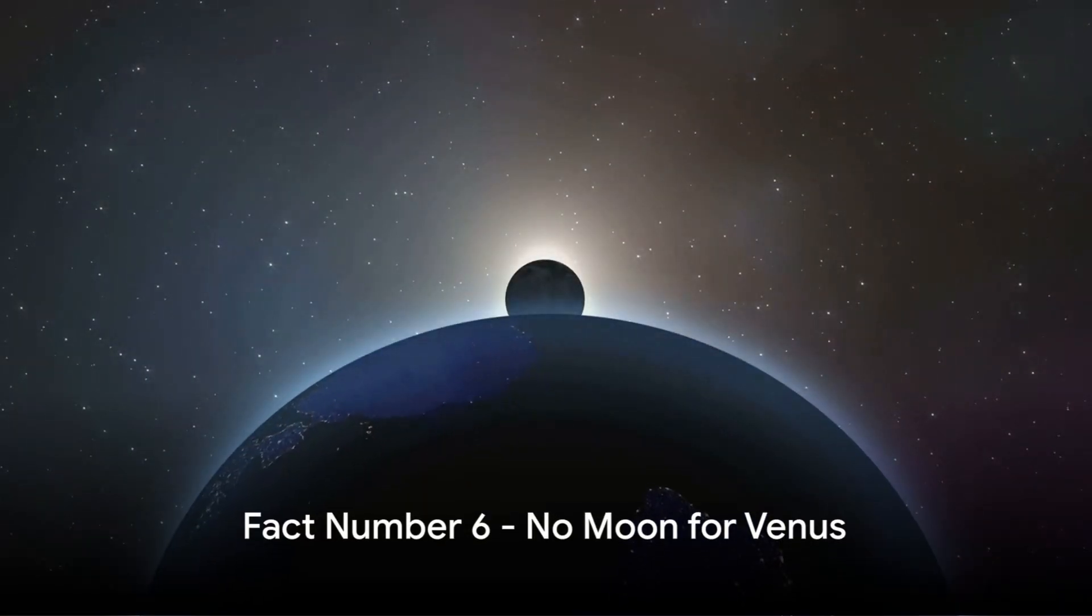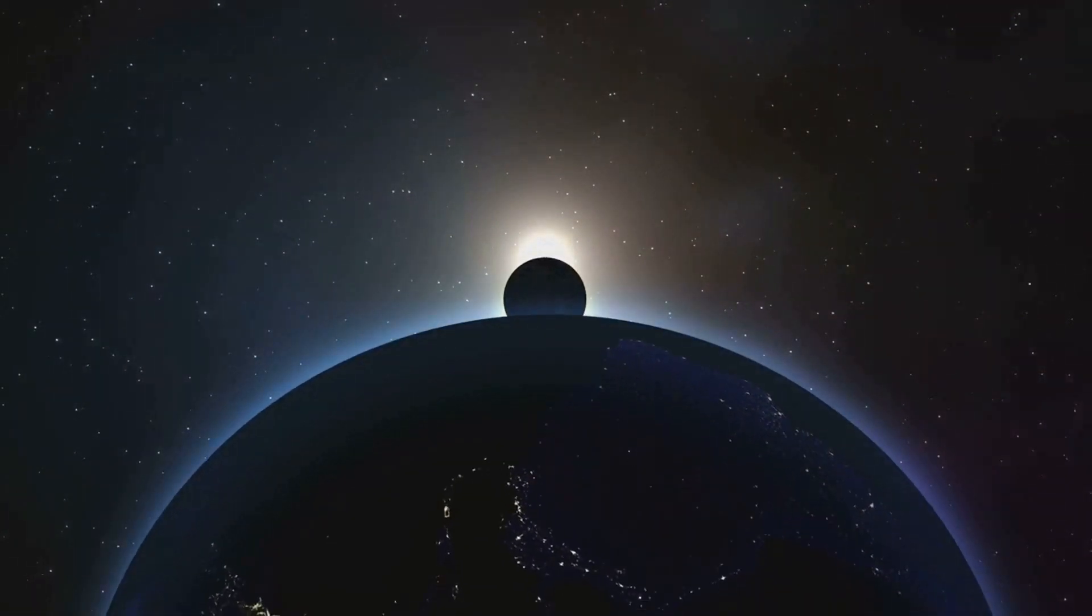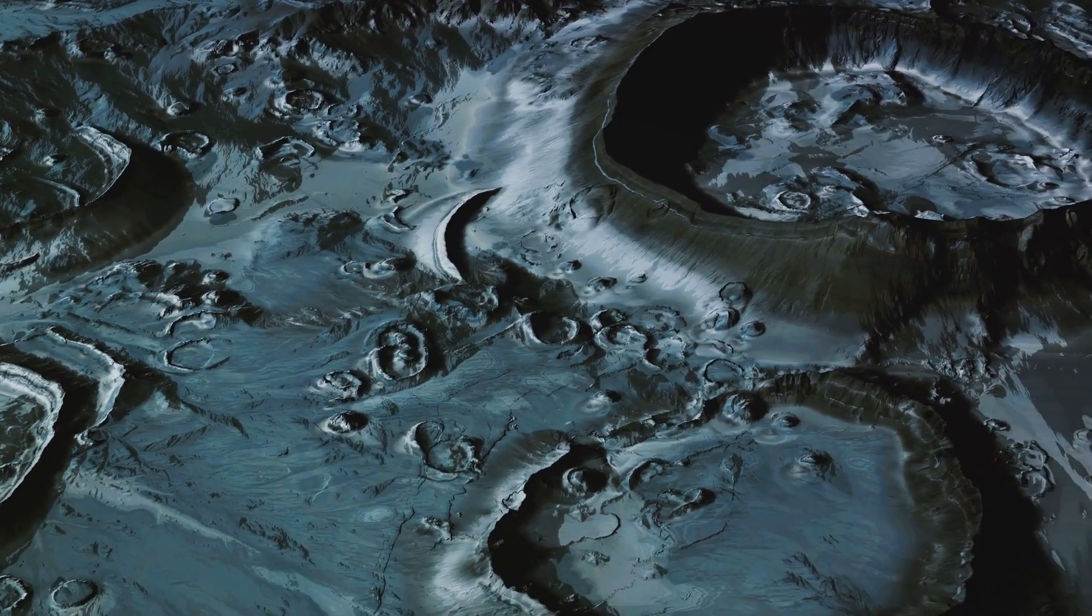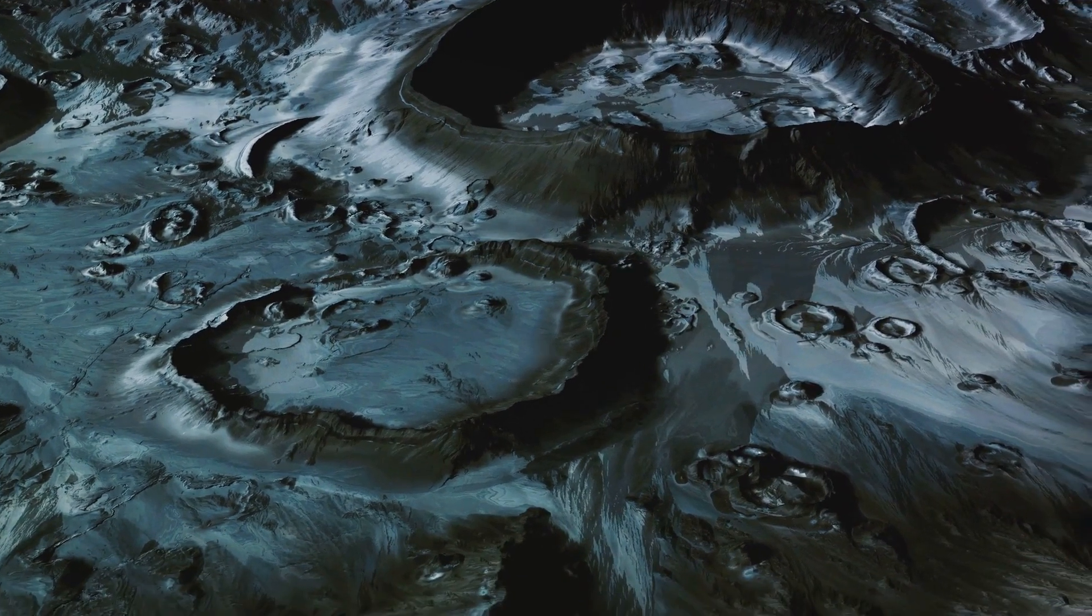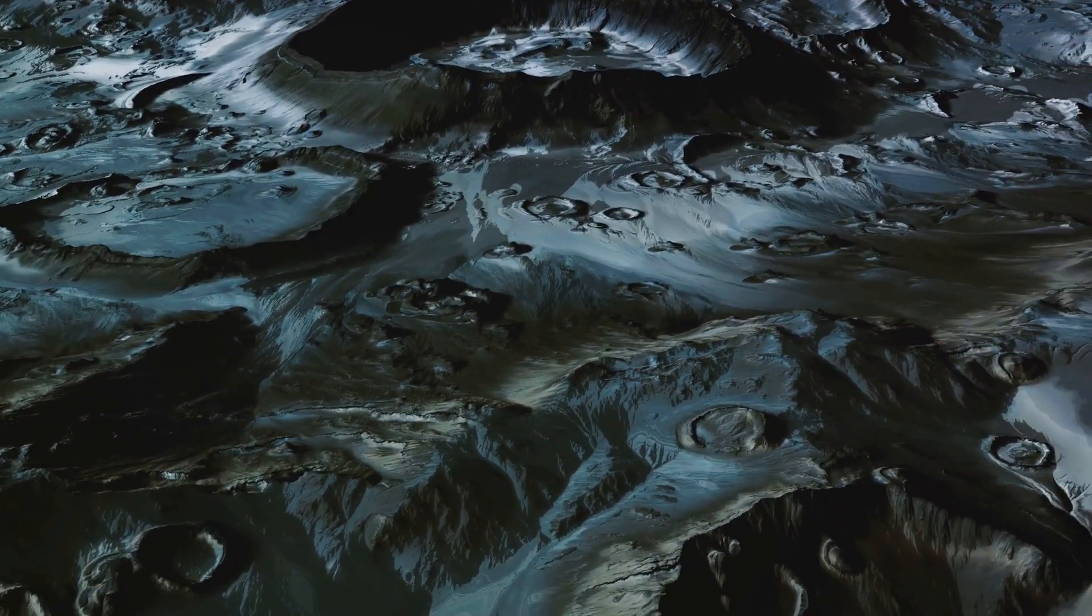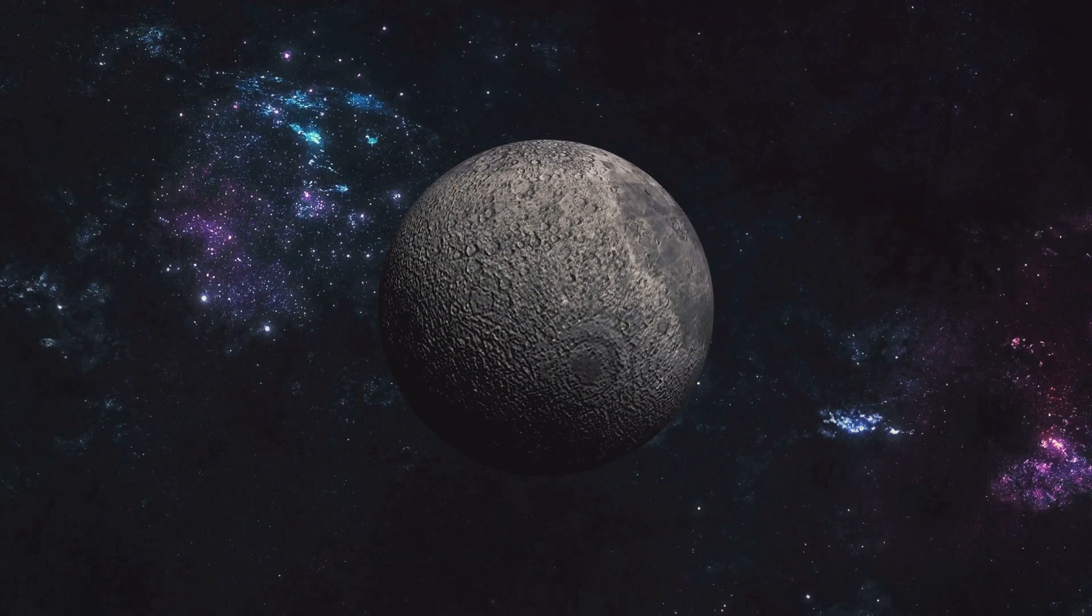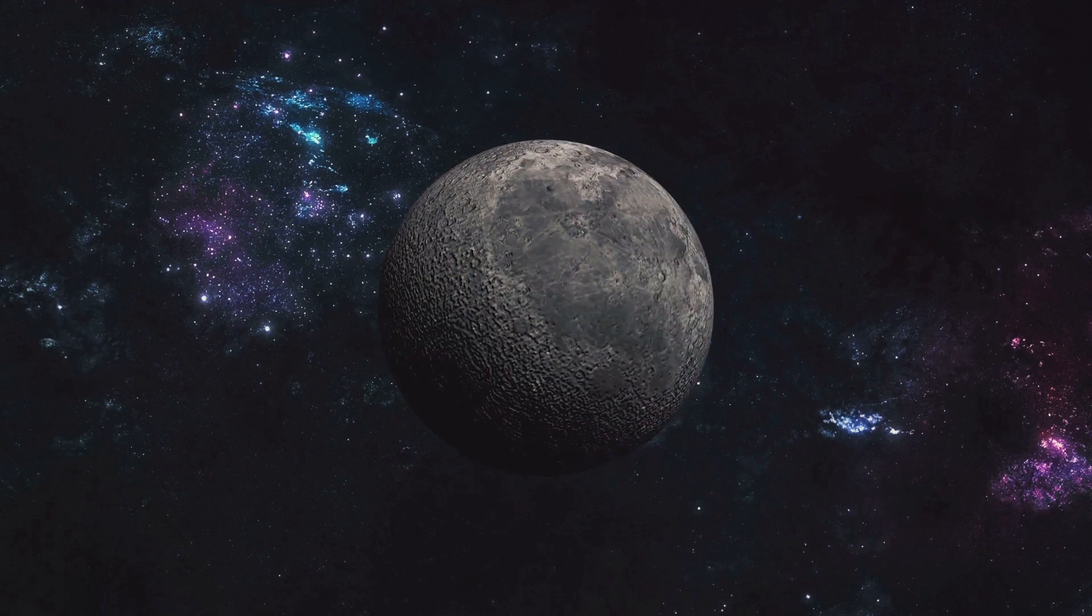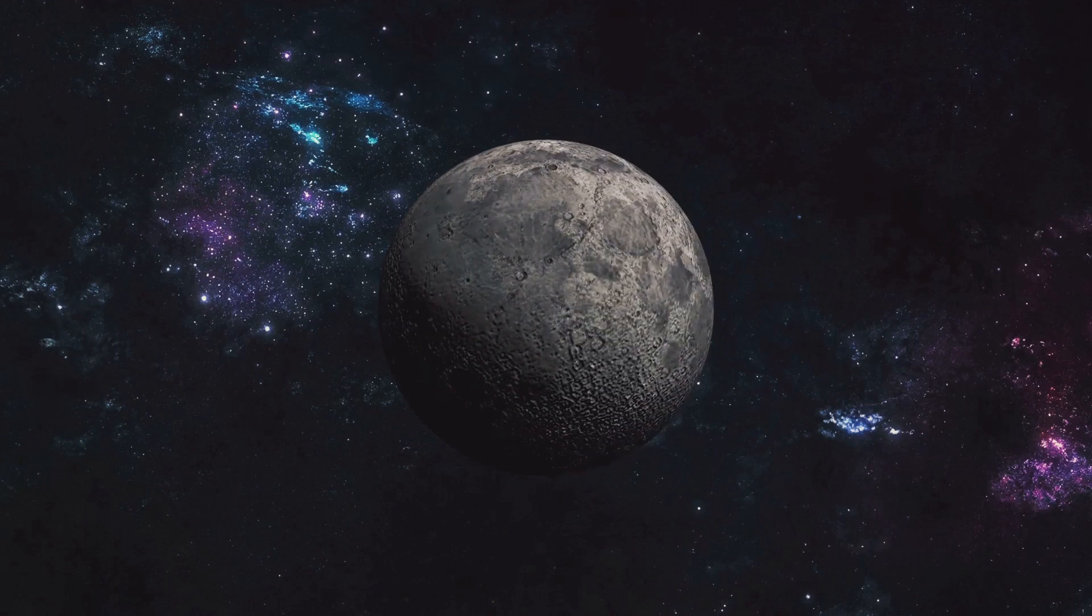Fact number 6, Venus is a lonely planet with no moons of its own. Now, you might be wondering, why is Venus moonless when Earth has one and Mars even boasts two? Well, it's a question that has long intrigued astronomers. One theory is that Venus did have a moon in its early life, but a catastrophic collision could have sent it hurtling out of orbit. Another speculation suggests that Venus's strong gravitational pull might have prevented a moon from forming in the first place. The planet's slow rotation could also play a part, making it difficult for a moon to remain in stable orbit.